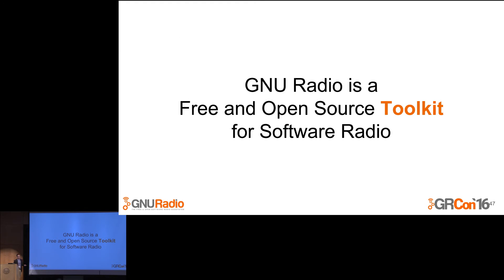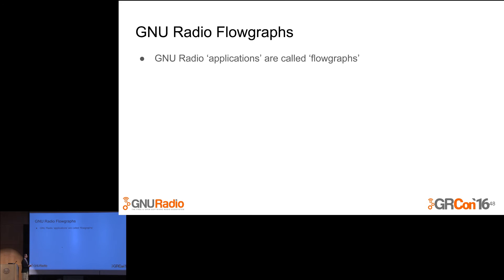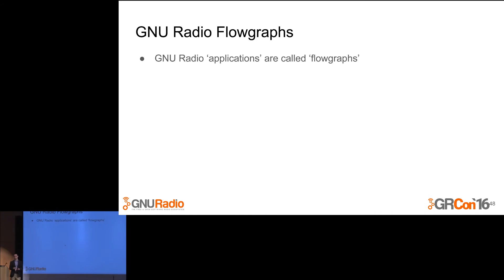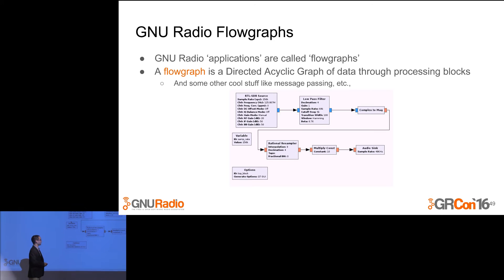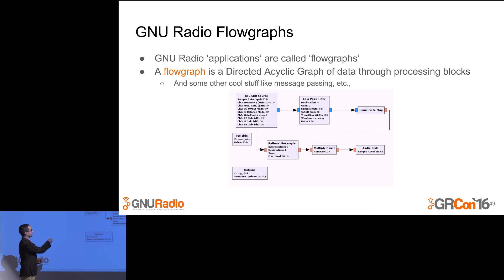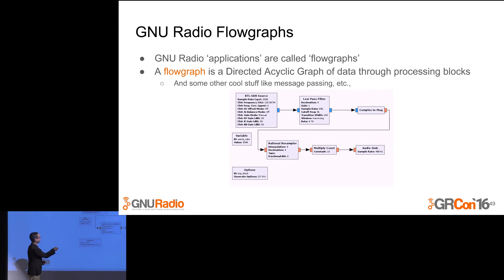GNU Radio is a free and open source toolkit. To understand what toolkit means, you need to understand some key terms and what the tools actually are within the project. GNU Radio applications are generally called flow graphs. A flow graph is, technically speaking, a directed acyclic graph of streaming data that moves through processing blocks. Here you can see a unidirectional path of data — a data stream moving through processing blocks.